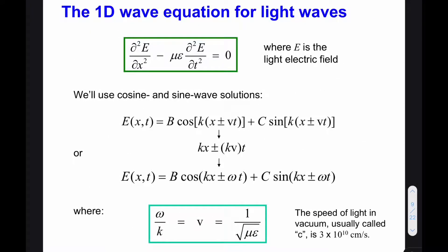Now let's look at what the wave equation for light waves looks like in one dimension. We'll consider only the electric field and treat it as a scalar quantity. The wave equation for light is given, where E is the electric field. Can you guess the velocity of light from this equation? The coefficient should be equal to 1/v², so the velocity is equal to 1 divided by the square root of μ times ε. Putting in the values of μ and ε for vacuum, we get exactly the speed of light in vacuum.